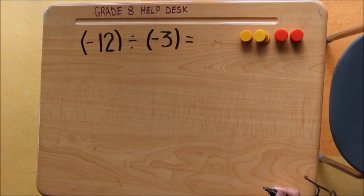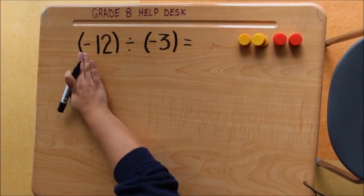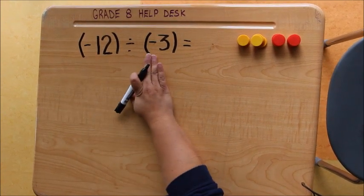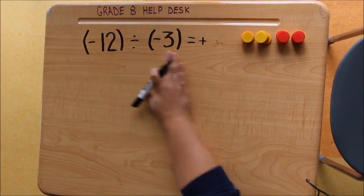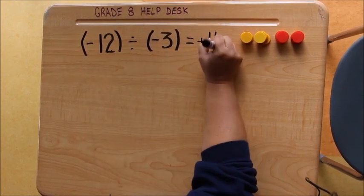Again, we think back to our numbers and what we know. We know when the signs are the same, so negative 12 divided by negative 3, our quotient will be positive. And 12 divided by 3 is 4.